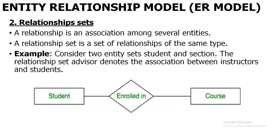Next, relationship set. For the entities — student and course — what is the relationship between these two entities will be mapped in the relationship set. The relation between student and courses is that a student will be enrolling for the courses. So the name is given as 'enrolled in' or also 'enrolls'. Students are going to enroll for the courses in the college. This is how you will be mapping the relation for two or more entities.